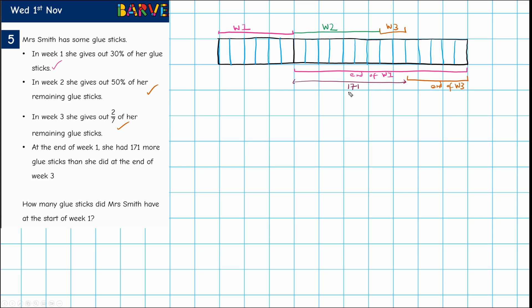And how many parts does that represent? That's one, two, three, four, five, six, seven, eight, nine. So we now know that nine parts equals 171. So if we divide 171 by nine, we get 19.